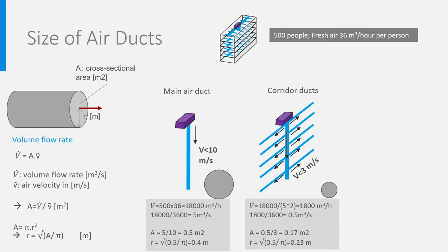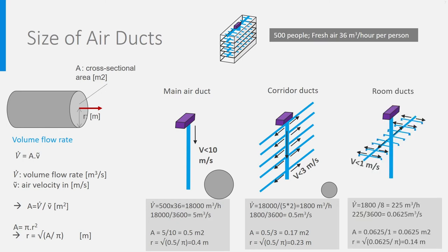Finally, the ducts to the rooms. If we assume that there are four branches at each side, at both sides of the corridor, eight branches per half floor therefore, then each room duct should convey 1,800 divided by 8 equals 225 cubic meters per hour, which is 0.0625 cubic meter per second. With a maximum air velocity of 1 meter per second, this leads to a cross-sectional area of 0.0625 square meter, corresponding to a radius of 14 centimeter, which is 28 centimeter diameter. So, it is not that complicated to find out the size of piping.